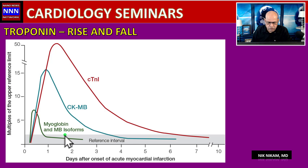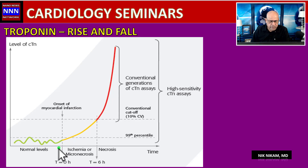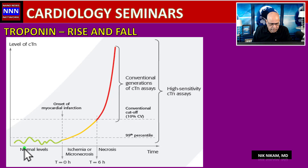Nowadays we don't use myoglobin much, and while CK-MB is still measured, most of the emphasis is on high-sensitivity troponin levels. The high-sensitivity troponin is very accurate in ruling in or ruling out myocardial ischemia — or more broadly myocardial injury — and identifying high-risk populations is quite impressive.